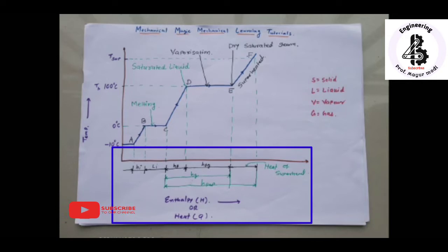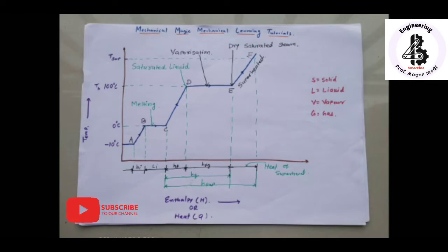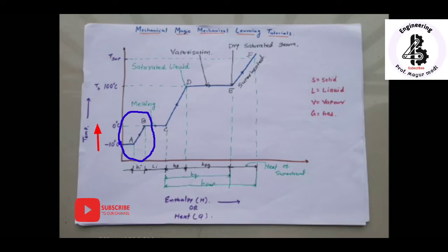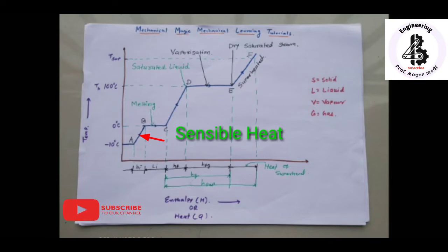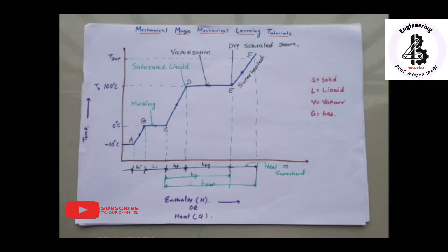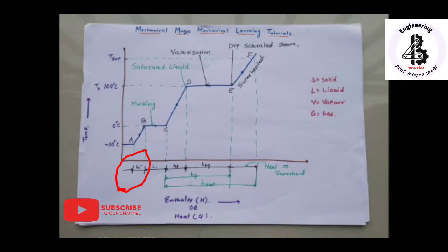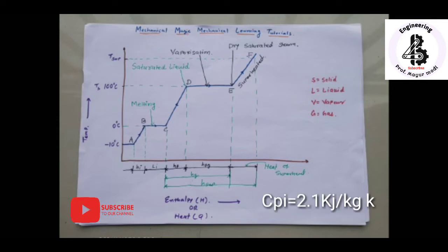Referring to the figure for process A to B: the temperature of ice increases from minus 10 degree centigrade to zero degree centigrade. The heat supplied during this heating is called the sensible heat of ice, and the temperature at zero degree centigrade represents the melting point of ice. The sensible heat of ice: h_i = cp_i × (0 − T1), where cp of ice equals 2.1 kilojoule per kg kelvin.